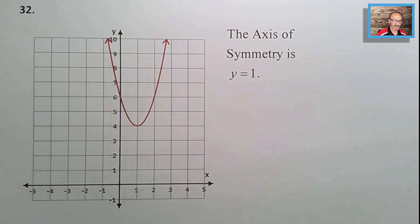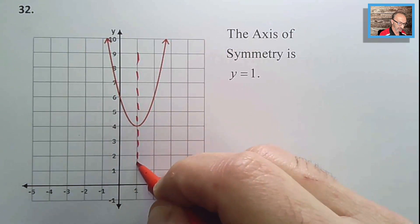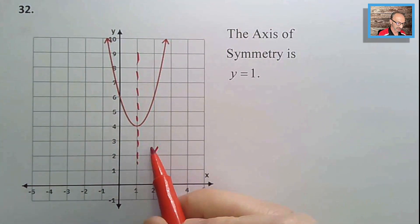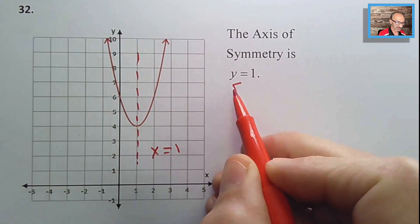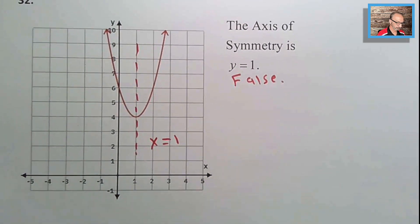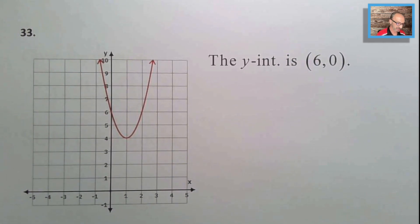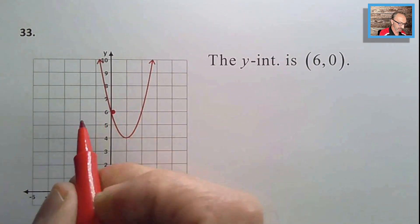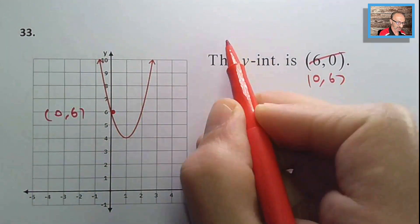Number thirty-two: the axis of symmetry is y = 1 — false. The axis of symmetry is x = 1, a vertical line, not y = 1.